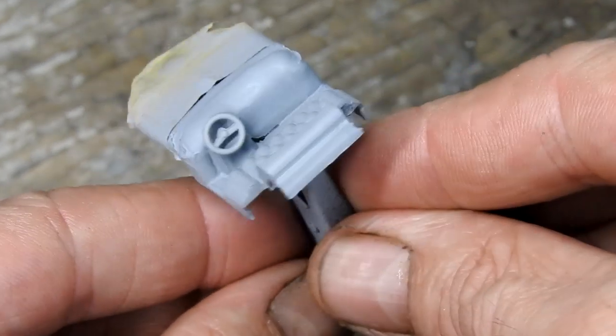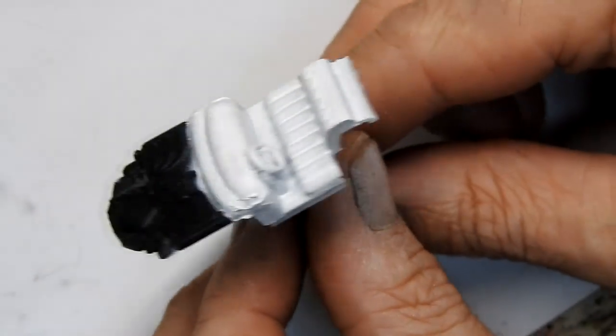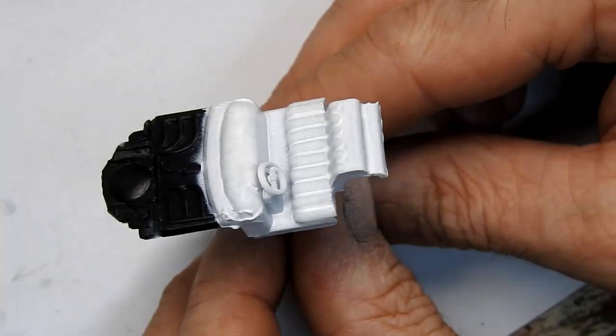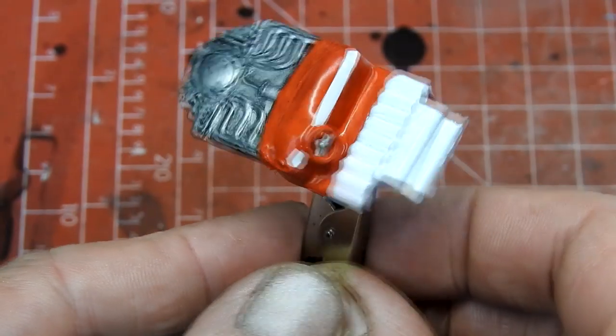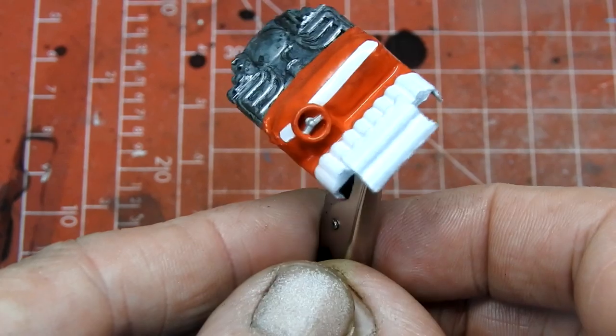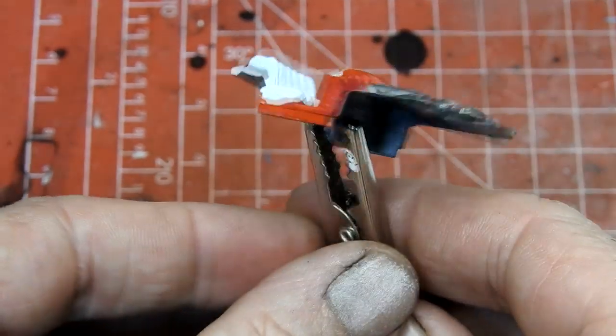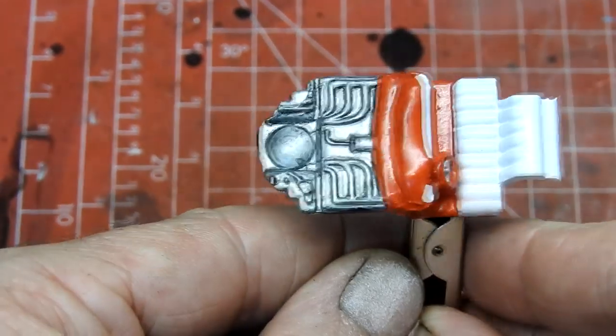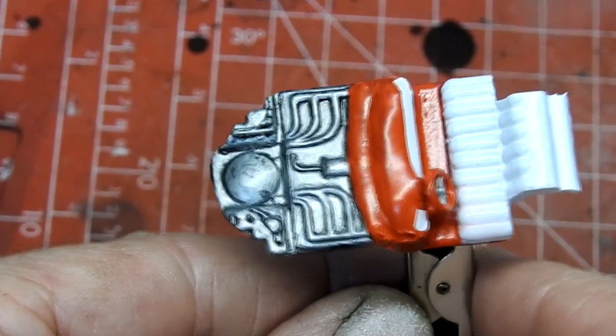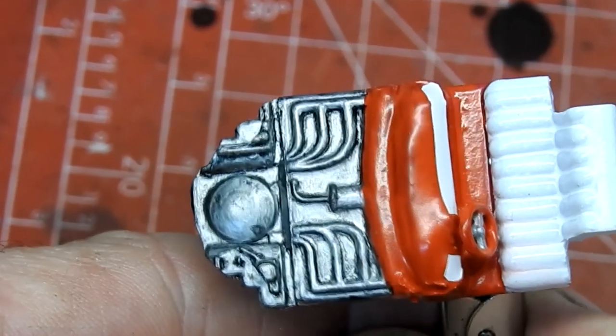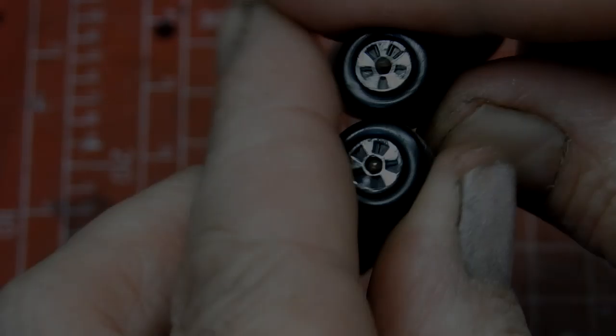I masked off the motor area and gave the interior a coat of primer. I then painted it white. Then I detailed the motor and the front of the interior. I also added a white stripe along the dash with some white decal paper. I think that looks pretty tidy now.